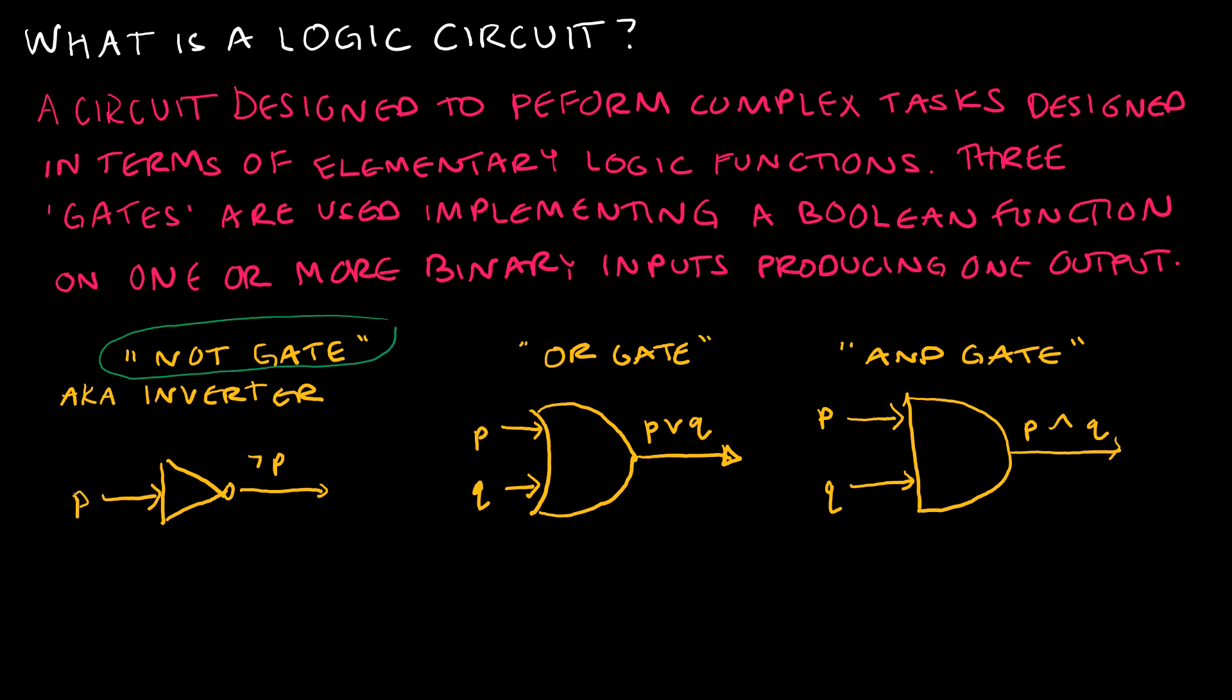The NOT gate, also called the inverter, which I think kind of sounds like a superhero villain. Unfortunately, the others don't have superhero villain names, so feel free to make up those on your own. But the NOT gate takes just one input. This is our NOT gate, so it's just a triangle. And the output is the negation of our input. So that's the NOT gate, which of course makes sense.